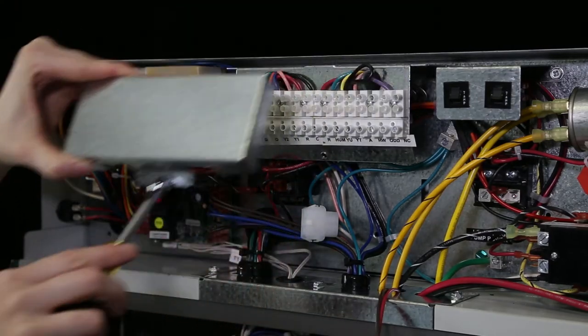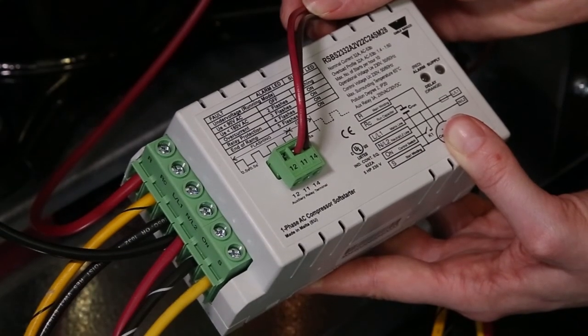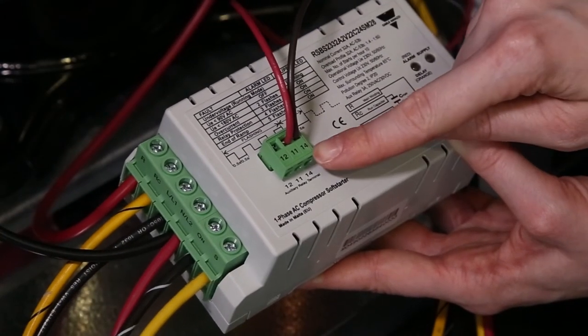Remove the low voltage terminal strip cover. Next, connect the two low voltage 18 gauge wires to the auxiliary relay on the soft start module.